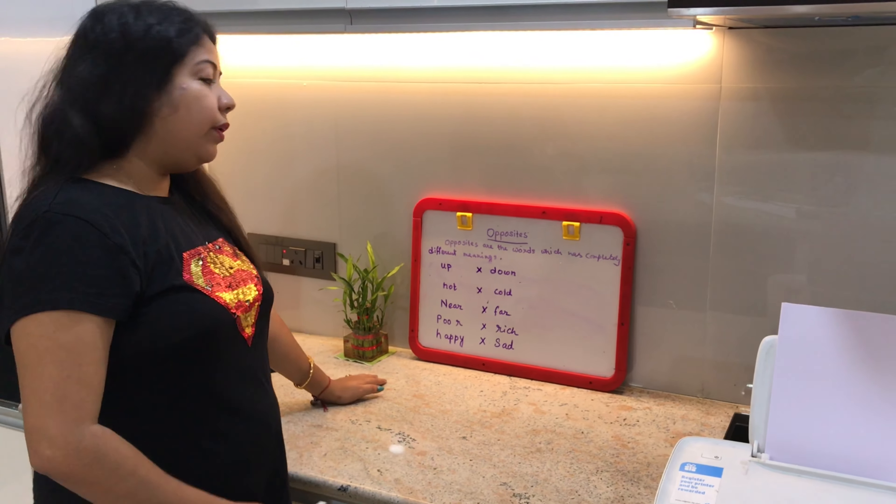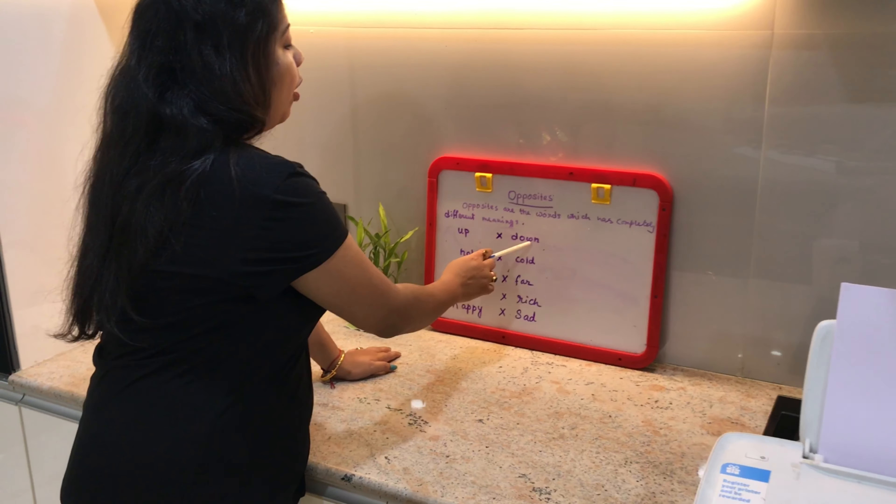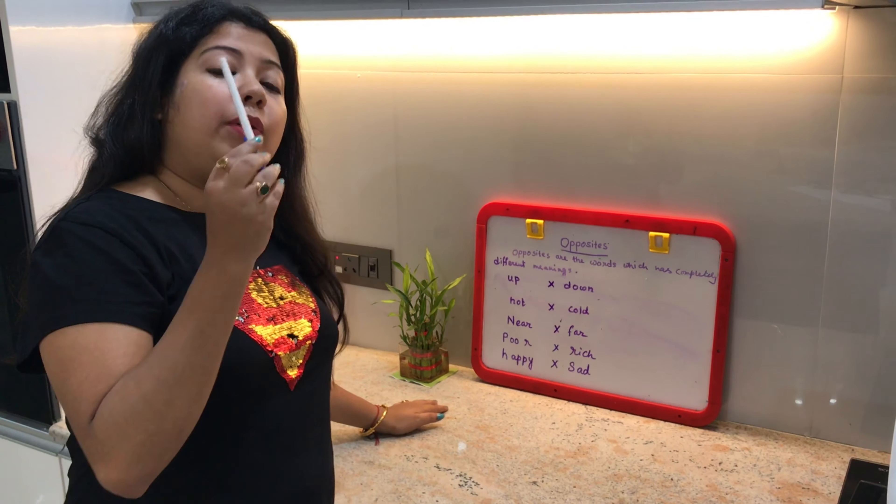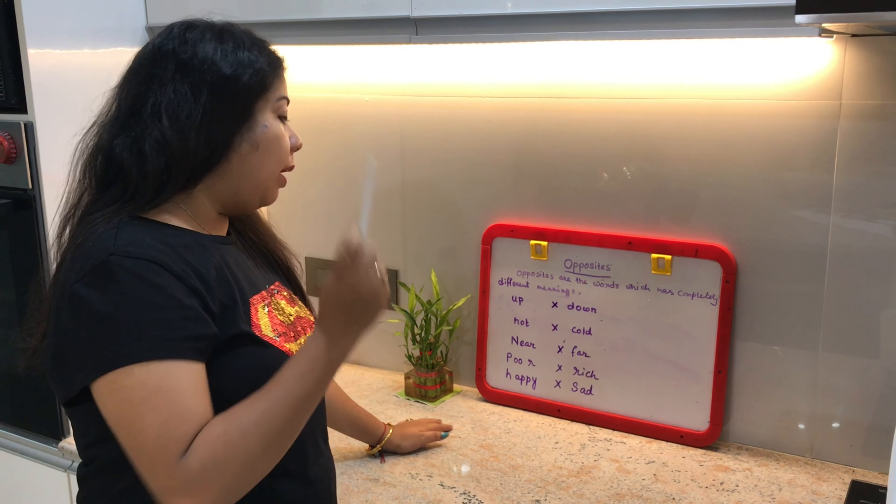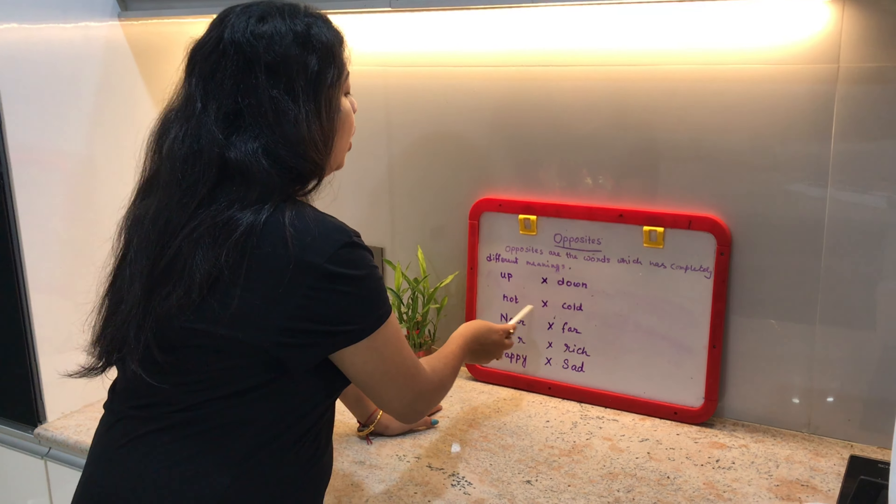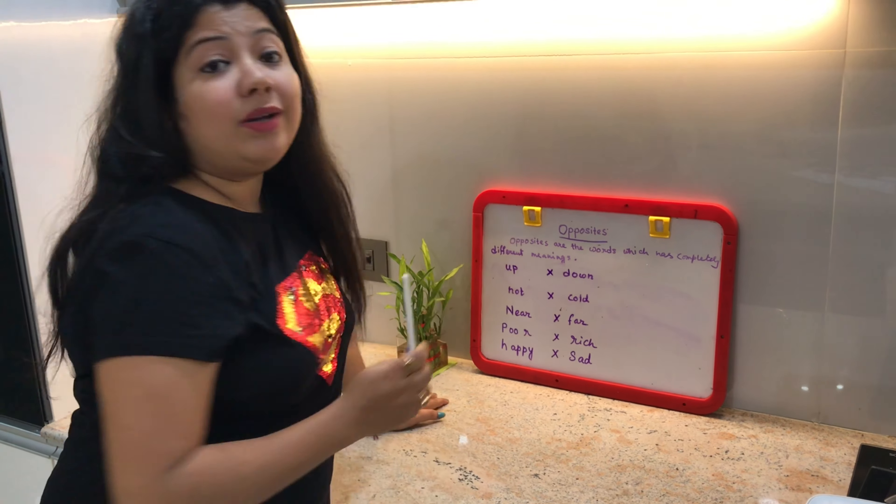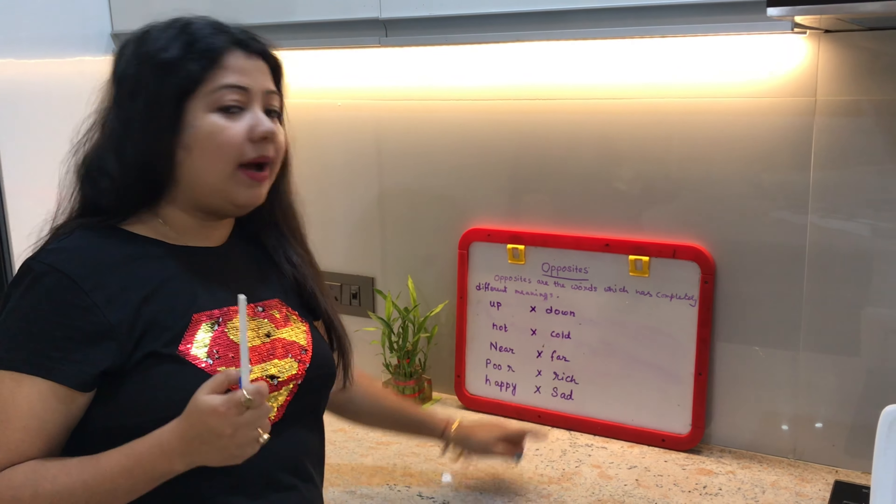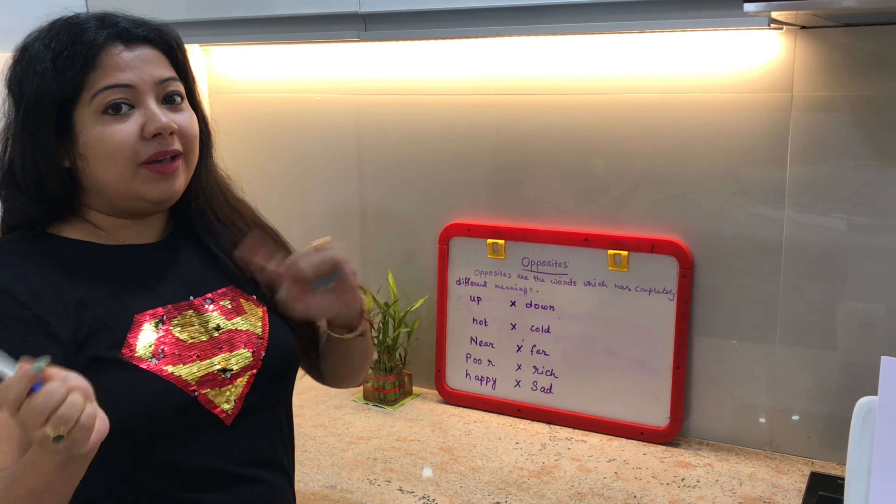There are some more like up - opposite is down. Up means upar, down means neeche. Next is hot and cold. What is hot? Tea is hot. What is cold? Ice cream is cold. So you can understand the opposite: hot and cold. Then near and far. Near means kaache/paas, far means doori.